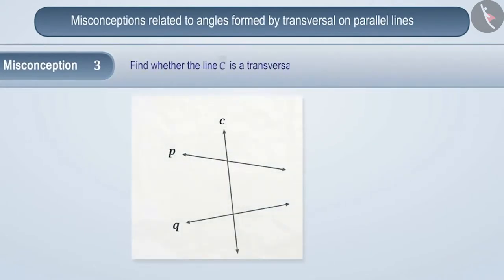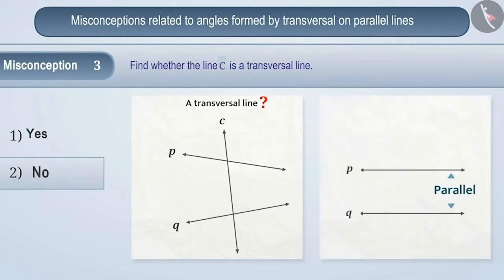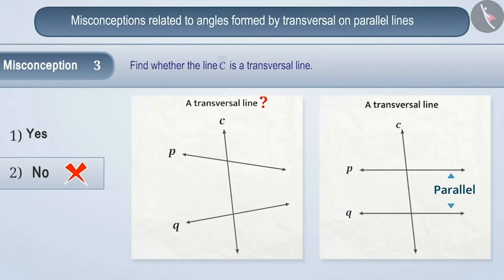Misconception 3. Find whether line C is a transversal. Look at this figure. If children are asked whether the line shown in the figure is a transversal, some children answer no. They assume that a line can only be called a transversal if it intersects two parallel lines. That's why they answer no. But this is a misunderstanding.